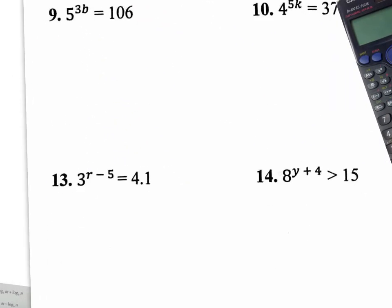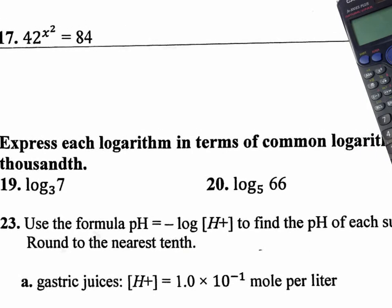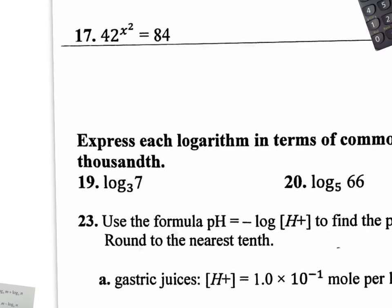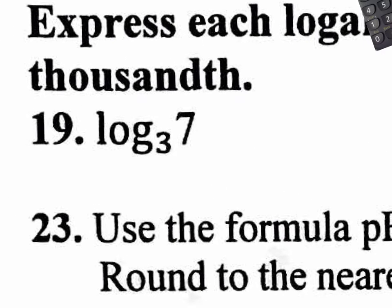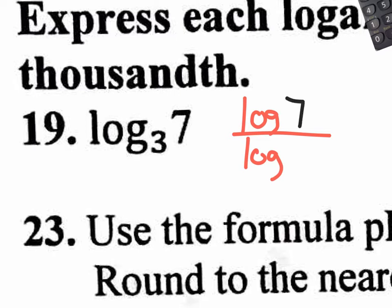Check out this homework assignment — number 19 at the bottom. It says: express each logarithm in terms of common logarithms. They don't want base 3; they want you to change it to base 10, which is common log. So the change of base formula is converting it into a fraction and putting whatever log you want — log base 3, log base 5, log base 10, log base E — as long as you do it both on top and bottom. They want common log, so common log goes on top and on the bottom. The bigger number, 7, goes on top; the base, 3, goes on the bottom as a regular number. That's a change of base right there. If they ask you to do this problem, you can't do it with the calculator — you have to know the change of base formula.